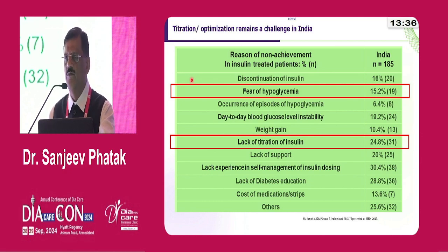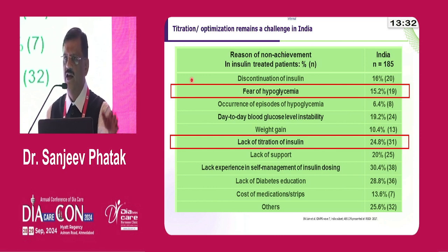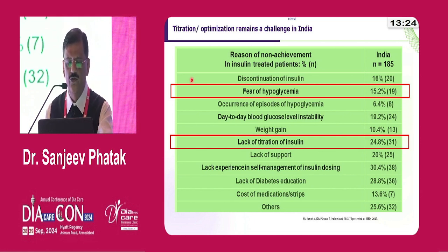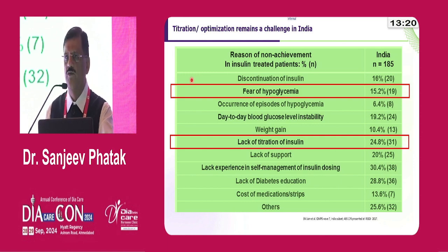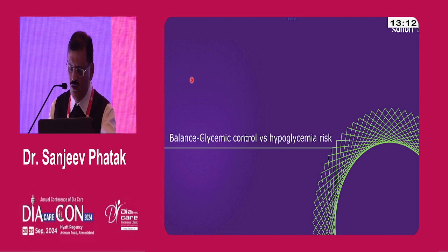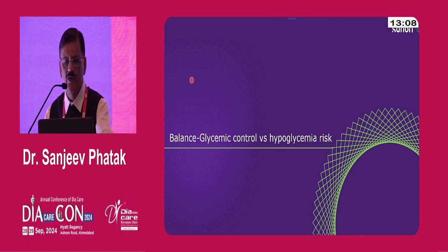The common reasons for insulin discontinuation in our country are: first, hypoglycemia; second, fear of hypoglycemia — sometimes there is no actual hypoglycemia but patients are told their sugar will drop; and then lack of titration. There are several other reasons — insulin itself is still a stigma — and because of that, after maybe four to six weeks, many patients discontinue despite our instruction not to.